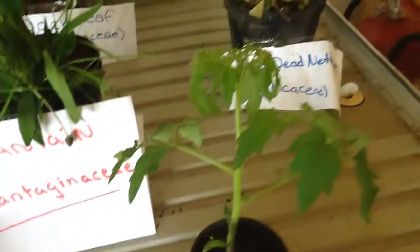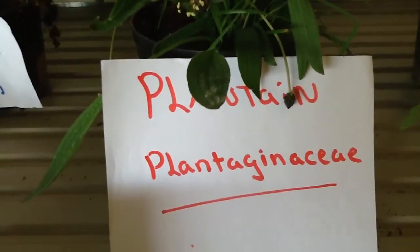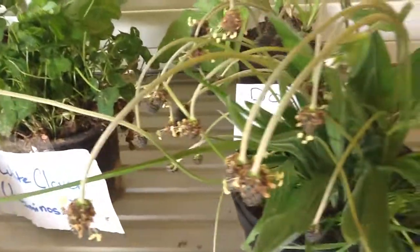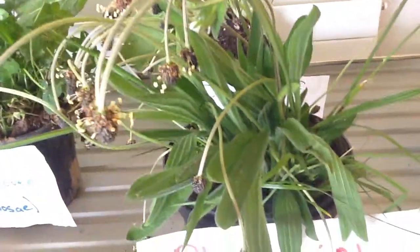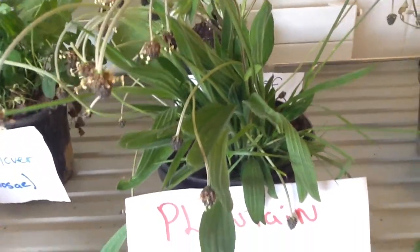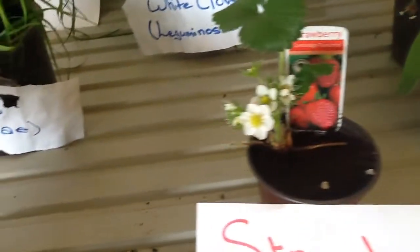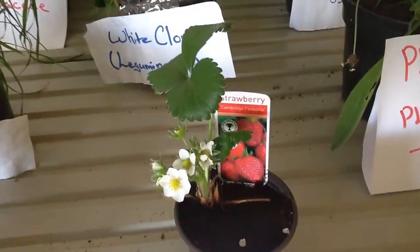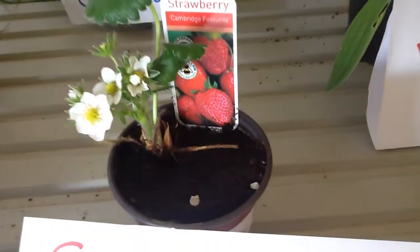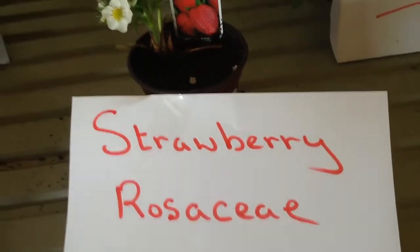So the Potato and the Tomato are from the same family. Then we have Plantain from the family Plantaginaceae, and we know the Plantain because its leaves are flat. They're also edible, with this black head on it. And then the last one here we have the Strawberry Plant — Strawberries also from the family Rosaceae, the same as the Briar.